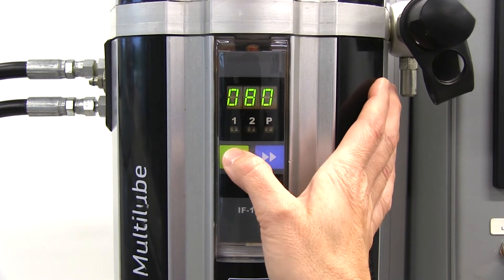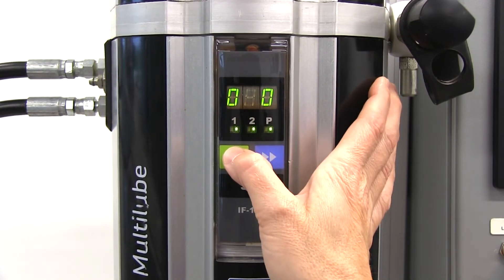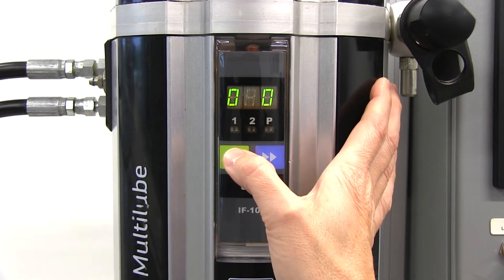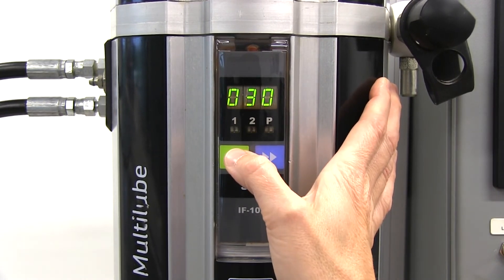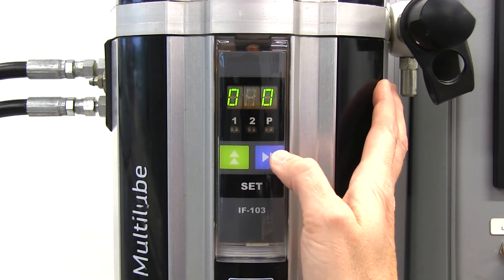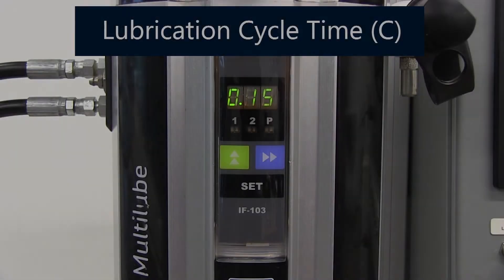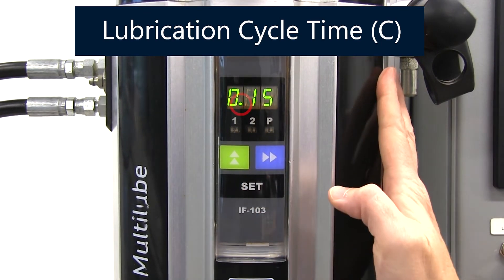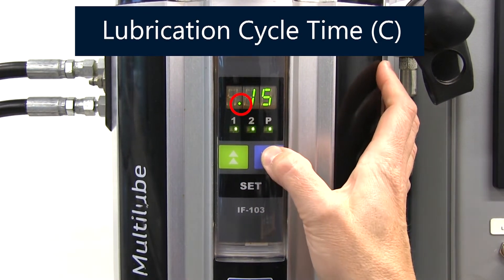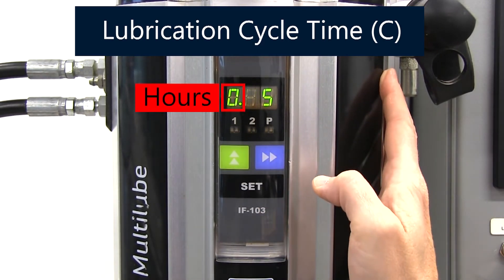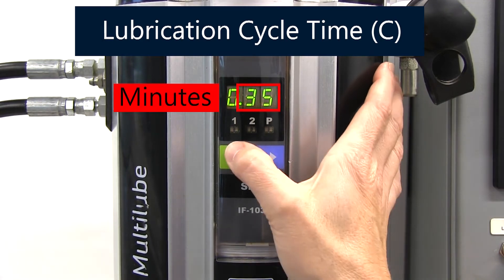Use the green up button to increase the number of the selected digit. The numbers cycle 0 through 9 and then back to 0 again. To proceed to the next digit to the right, press the blue right arrow button. For the lubrication cycle time (C) parameter, the decimal location can also be adjusted. Remember that hours are indicated to the left of the decimal and minutes are indicated to the right.